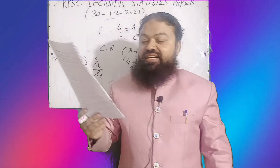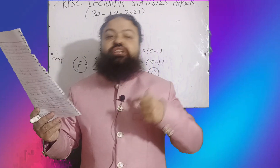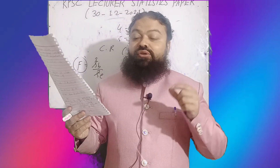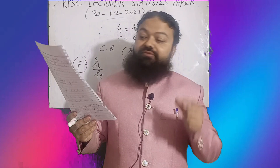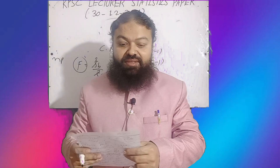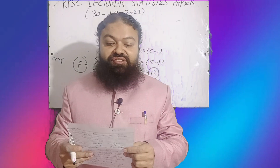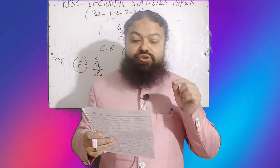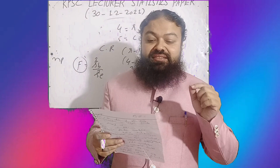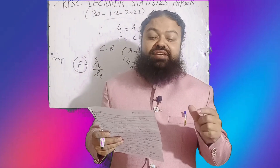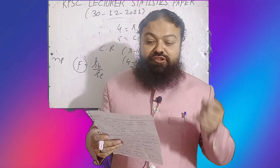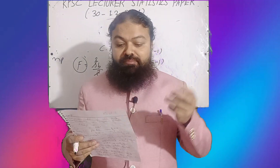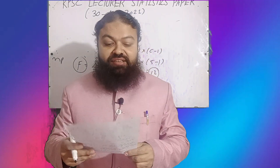The next question: in path analysis, which variable starts a causal sequence? The correct option is exogenous. The next question: the Juran terminology for quality management consists of planning, control, and improvement.